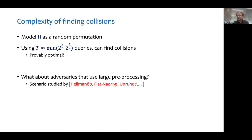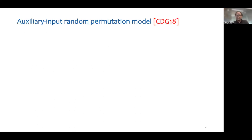The scenario of preprocessing attacks were first studied in several different works, for example, in the context of function inversion, collision resistance, et cetera. Coretti et al. introduced the auxiliary input random permutation model to capture preprocessing adversaries in the context of random permutations.